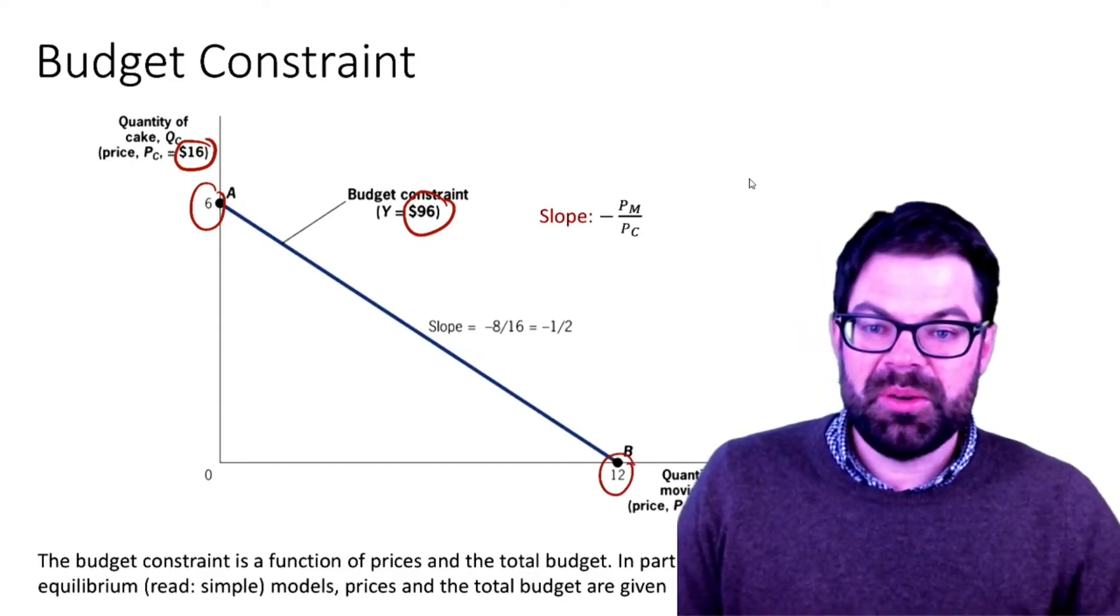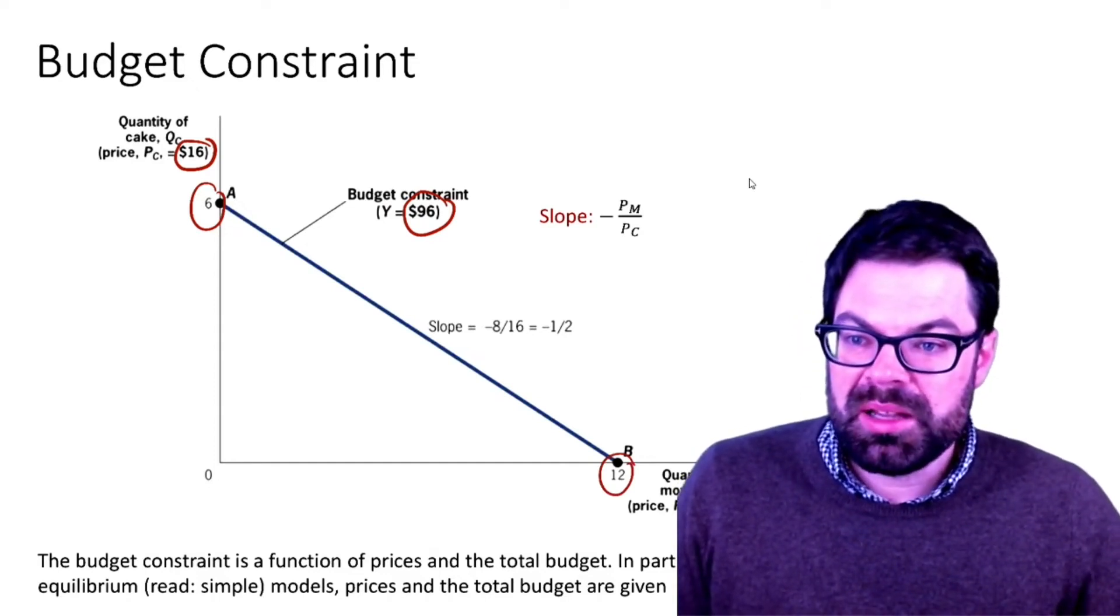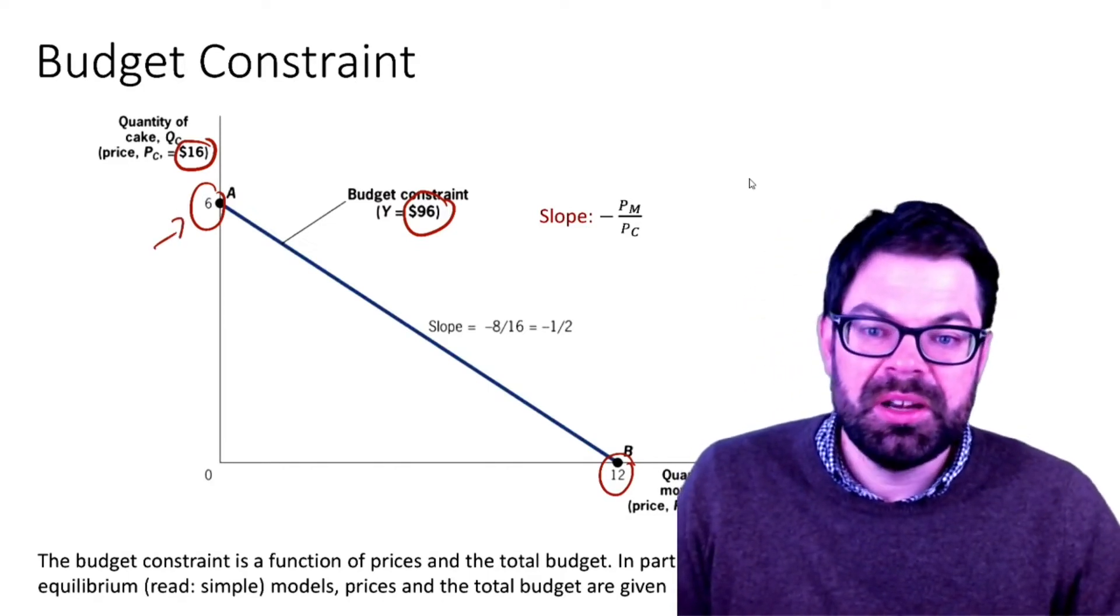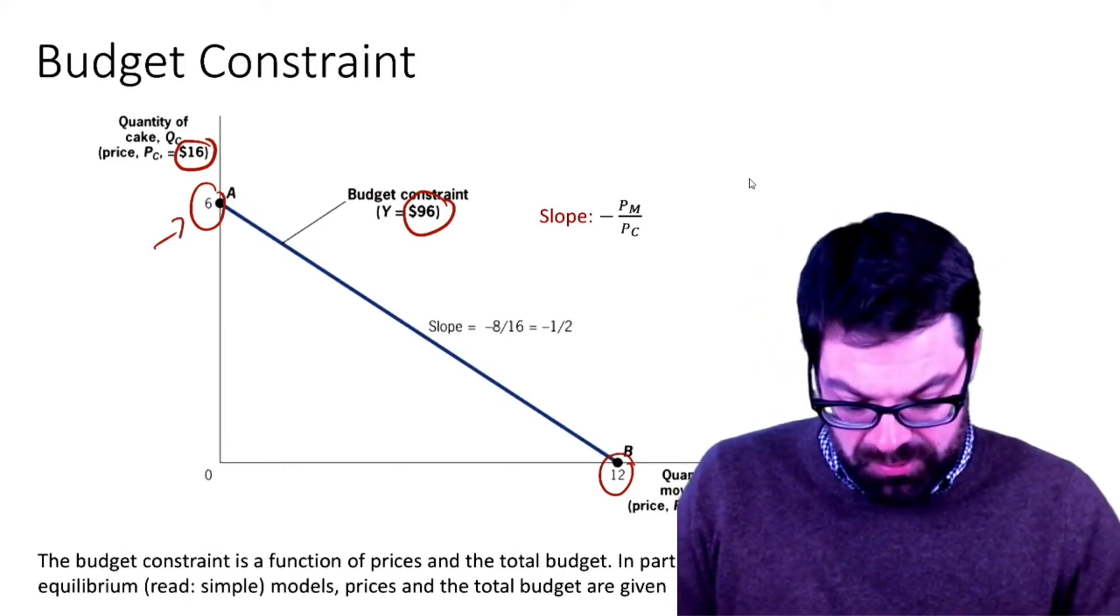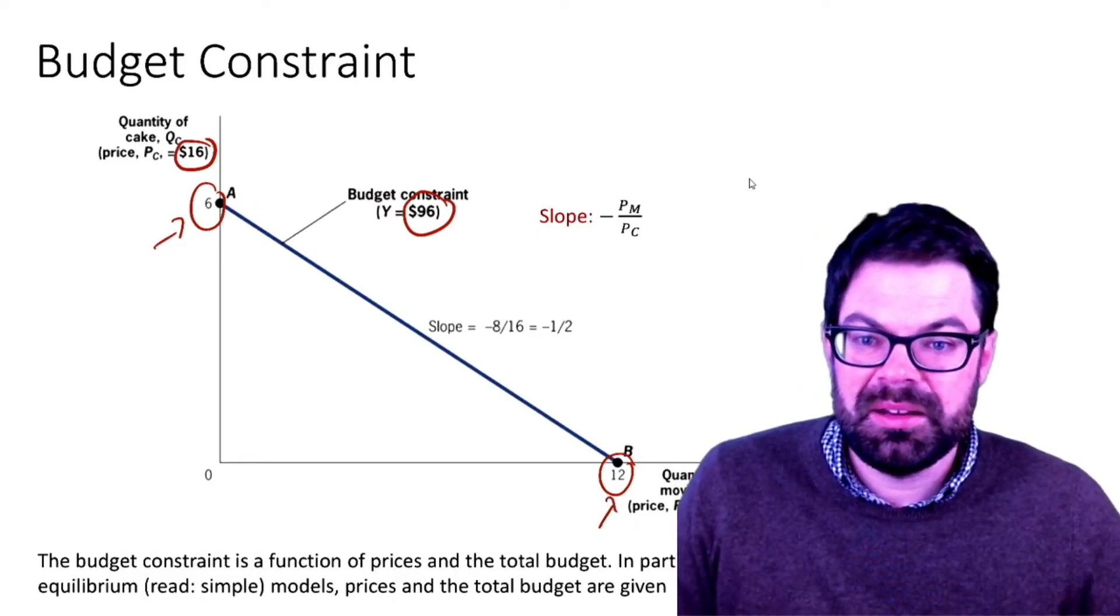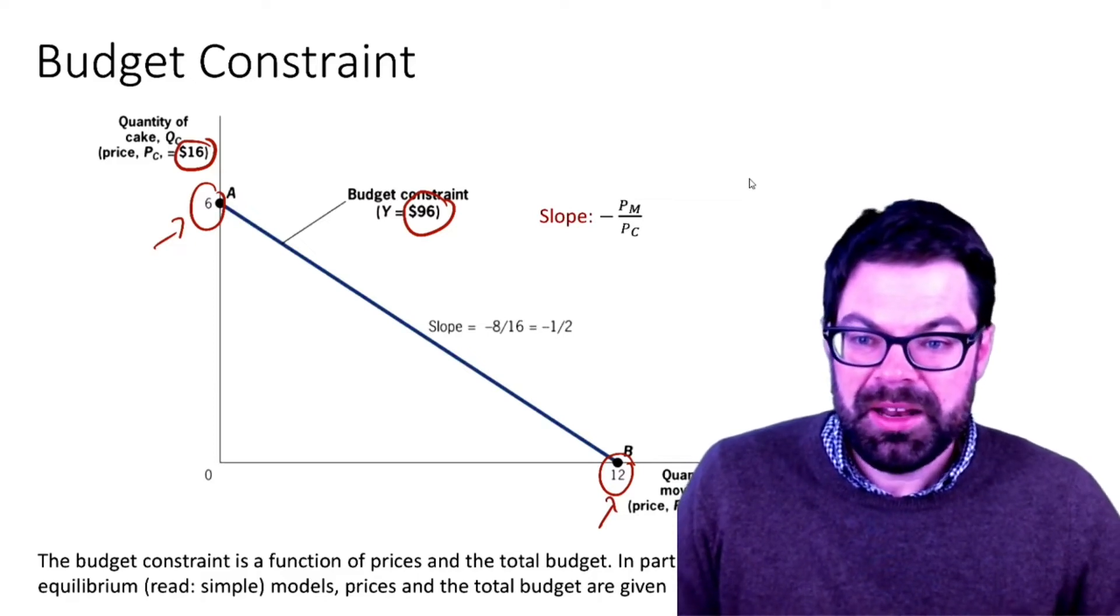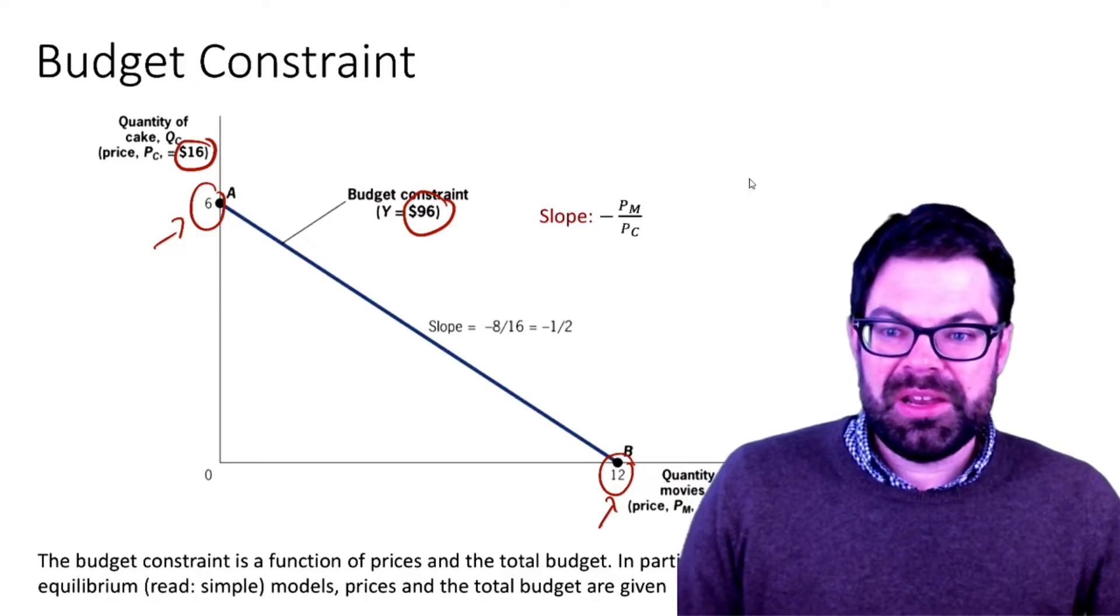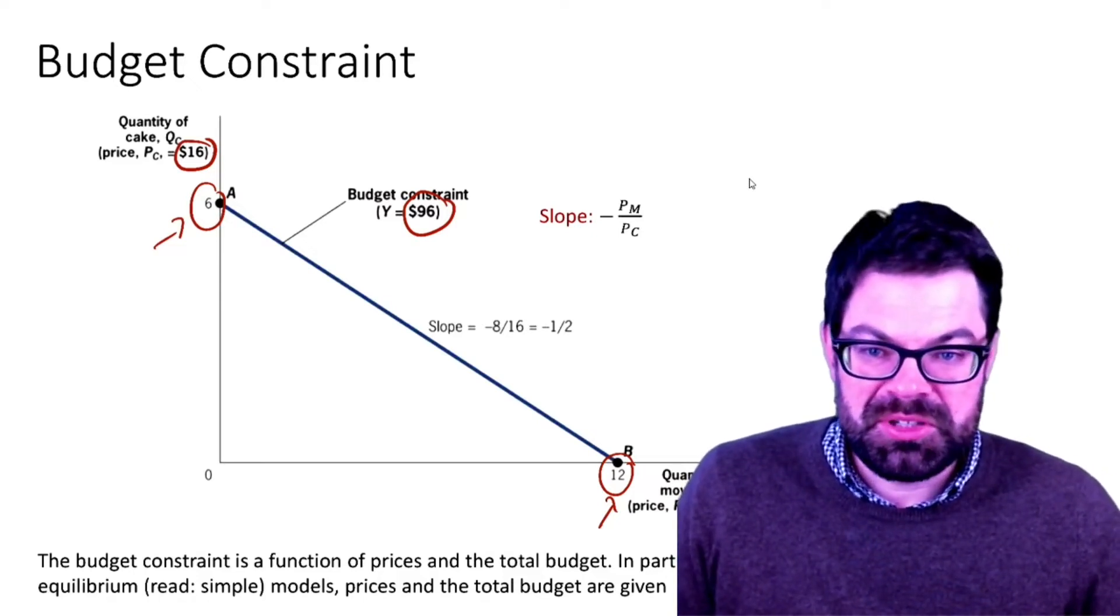If the person spends all their money on cakes they would be able to afford six cakes, or with 96 dollars they would be able to afford 12 cinema tickets, or they could afford any linear combination of the two. That linear combination is described by the budget constraint.